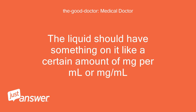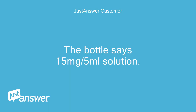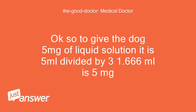The liquid should have something on it like a certain amount of mg per milliliter. The bottle says 15 mg / 5 mL solution. Okay, so to give the dog 5 mg of liquid solution, it is 5 mL divided by 3 — 1.666 mL is 5 mg.